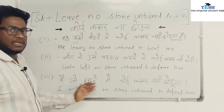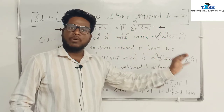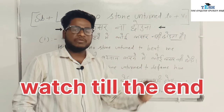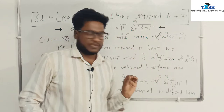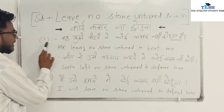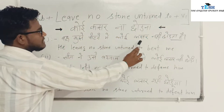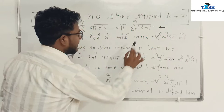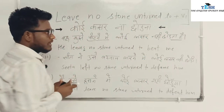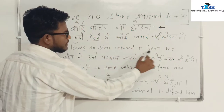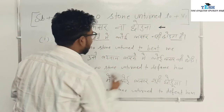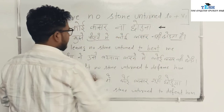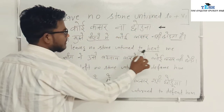I have some examples so you can understand this structure. Let's look at this example: He leaves no stone unturned to beat me. Here, 'to beat' means the first form of the verb — it is an infinitive verb. So the sentence is: He leaves no stone unturned to beat me.